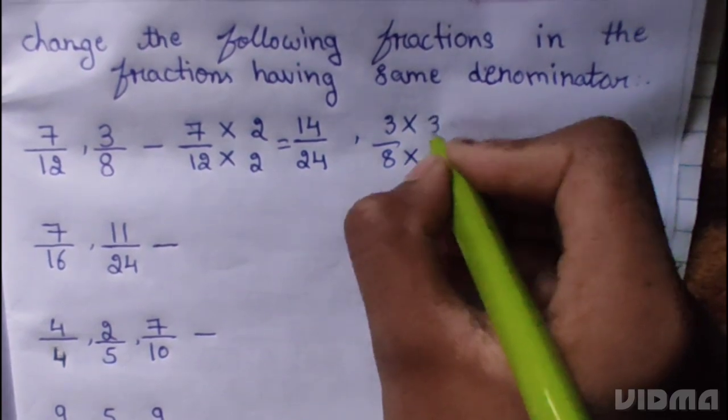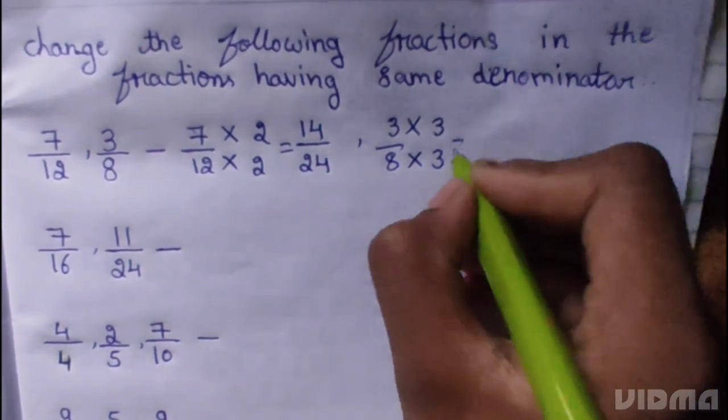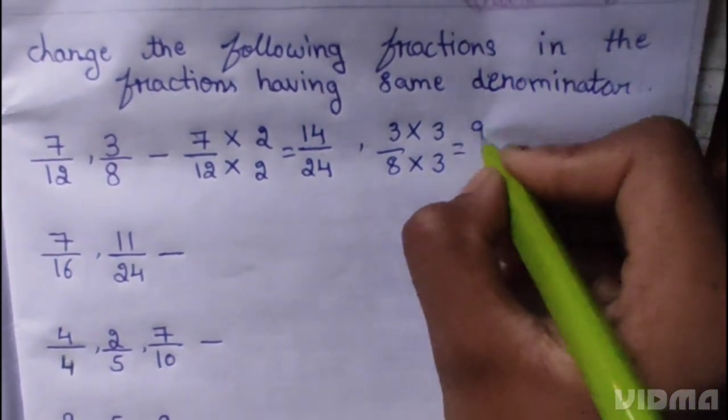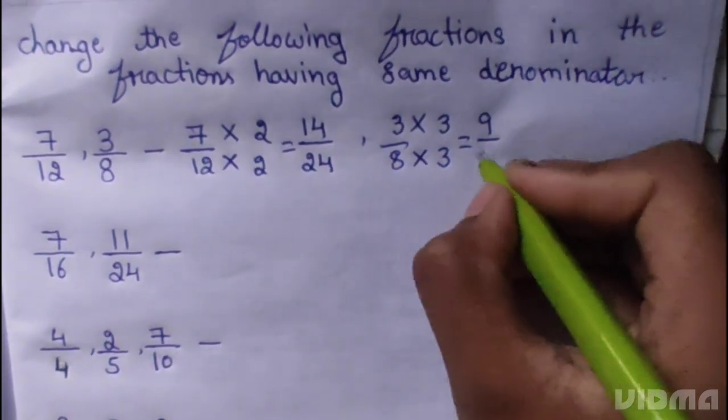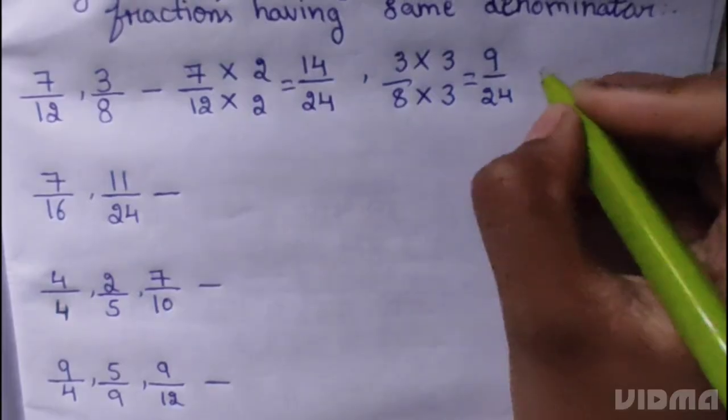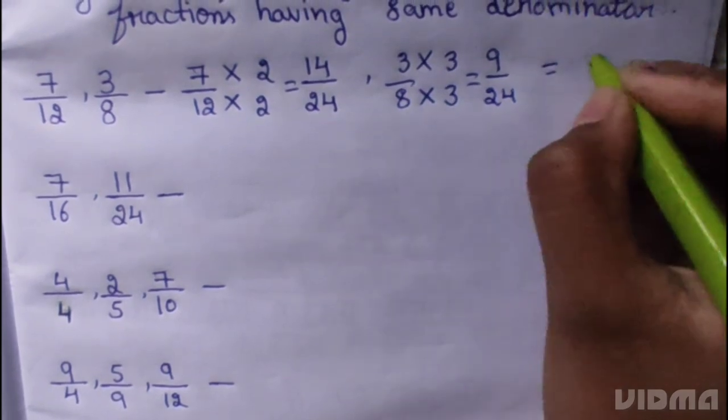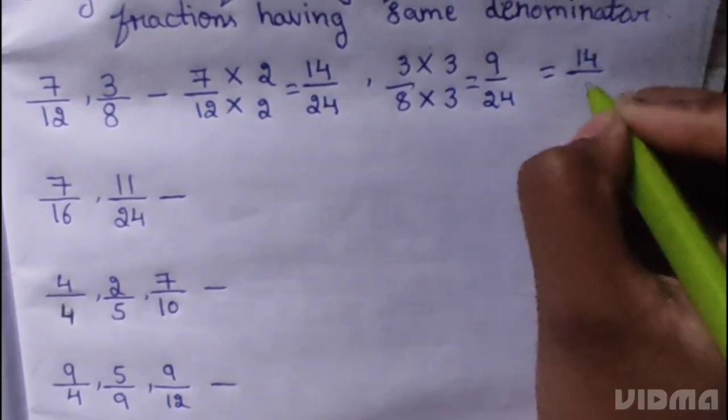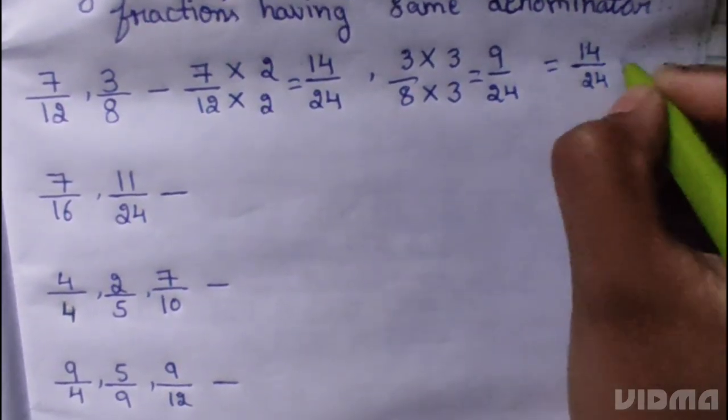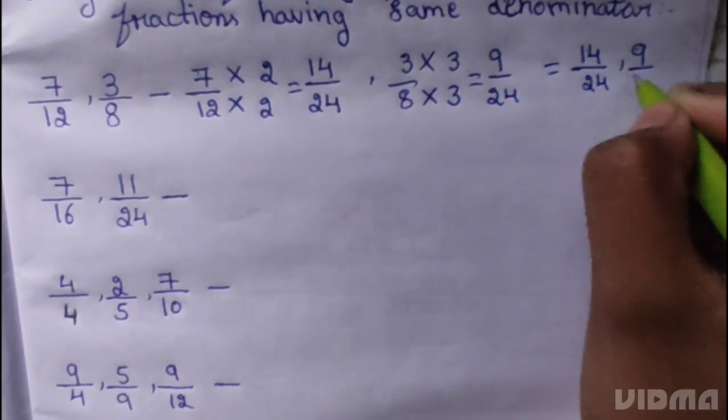3 by 8, 3 multiplied 3, 8 multiplied 3. 3 times 3 is 9, 8 times 3 is 24. Answer, 14 by 24, 9 by 24.